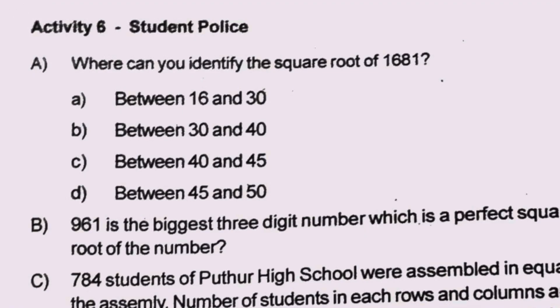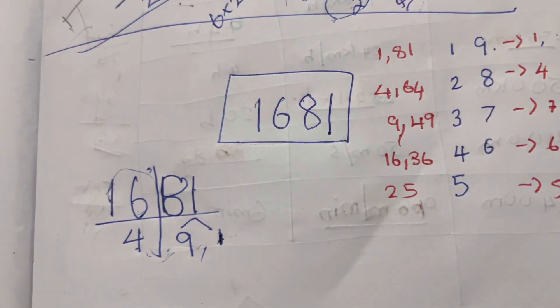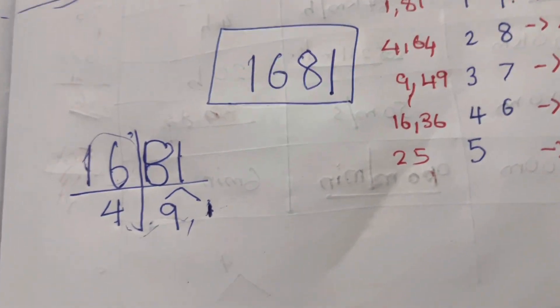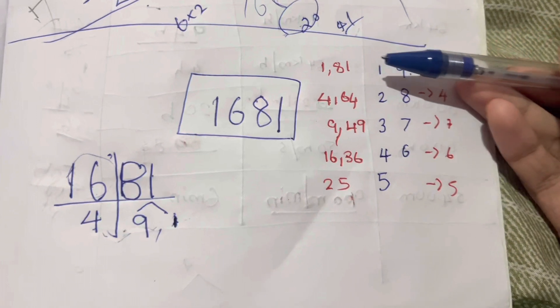Activity 6: Student Police. Where can you identify the square root of 1681? There are options: between 16 and 30, between 30 and 40, between 40 and 45, between 45 and 50. I will show you the shortcut method.